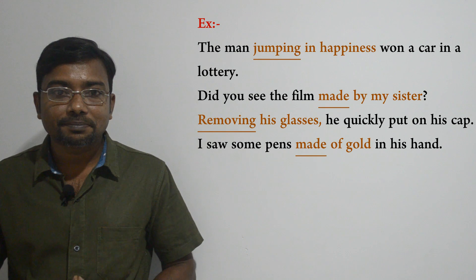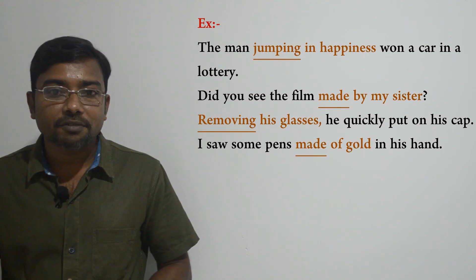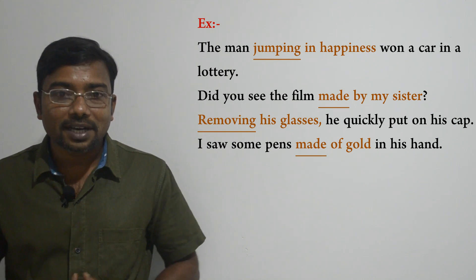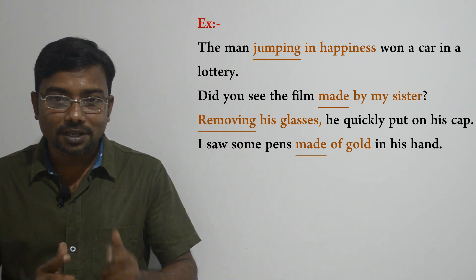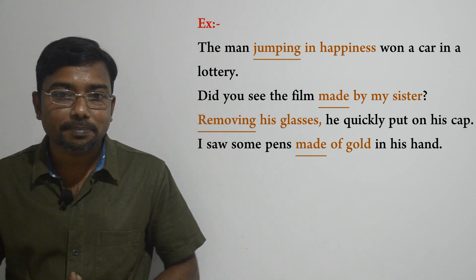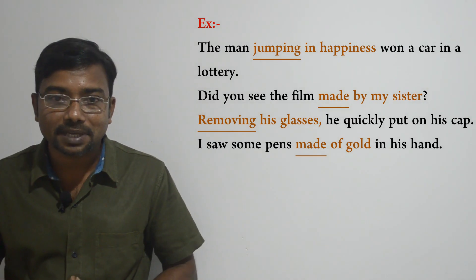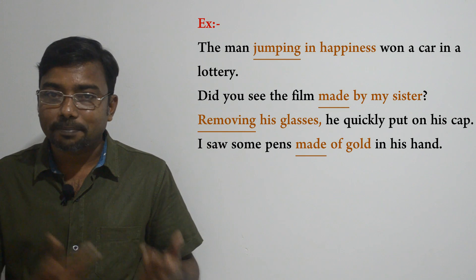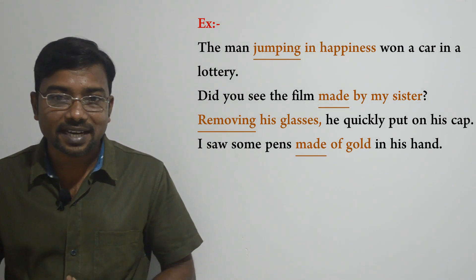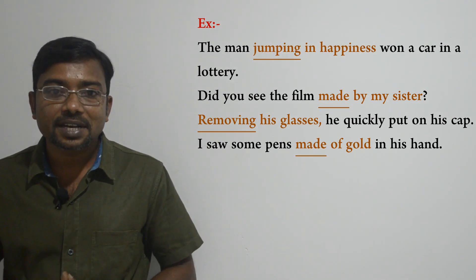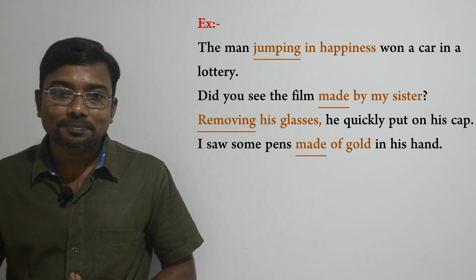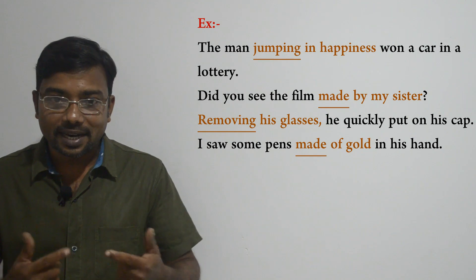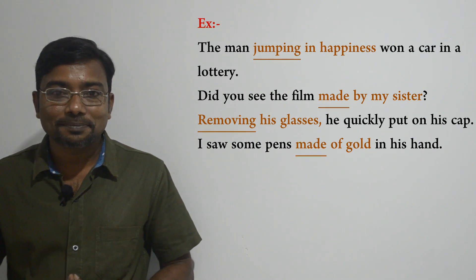Let's go through the last example: 'I saw some pens made of gold in his hand.' Here, 'made of gold' is the participle phrase because it begins with the participle 'made,' which is a past participle. It also stands directly after the noun 'pens' to modify it. The entire phrase acts as an adjective to modify the noun 'pens.'